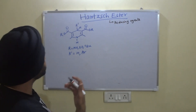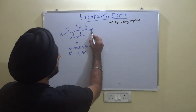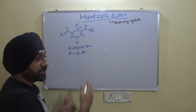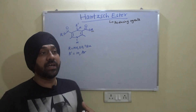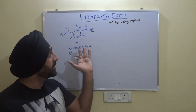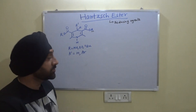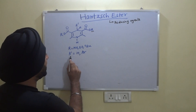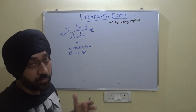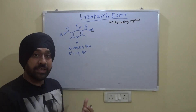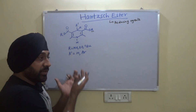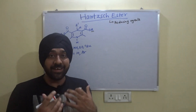These R groups are either methyl, ethyl, or tertiary butyl, and depending upon the ester used in the synthesis of these dihydropyridines, these vary. Similarly, this R-dash group can either be hydrogen or various allyl groups — it depends upon the aldehyde used during the course of the reaction.